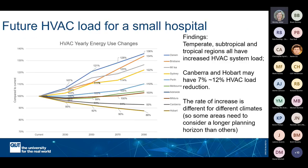The cooling load for the small single-storey hospital increases significantly more than for the large multi-storey hospital. This is believed to be due to the larger volume-to-surface-area ratio of a single-storey building compared to a multi-storey building, highlighting the need for single-storey healthcare buildings in particular to focus strongly on the building envelope now and into the future, in order to reduce heat gain and minimise the additional cooling required.